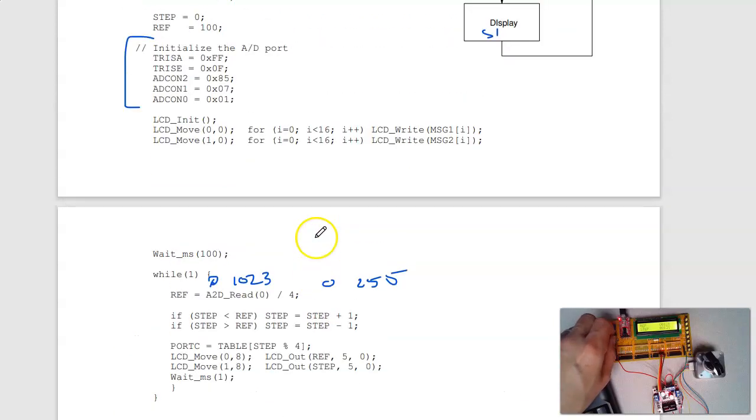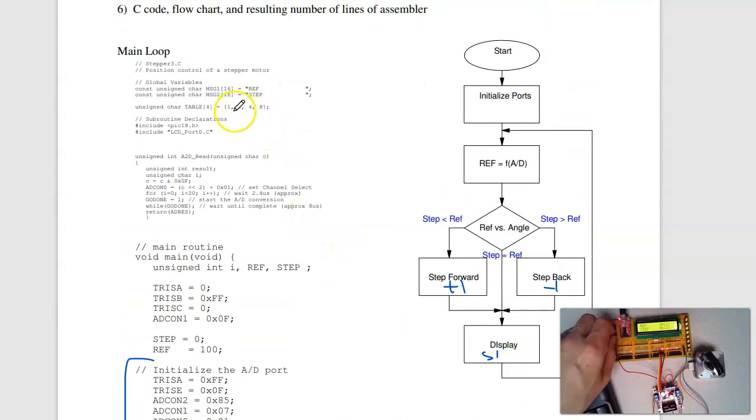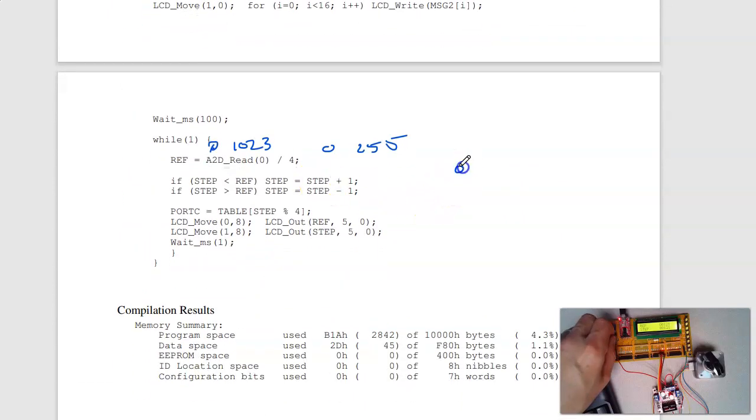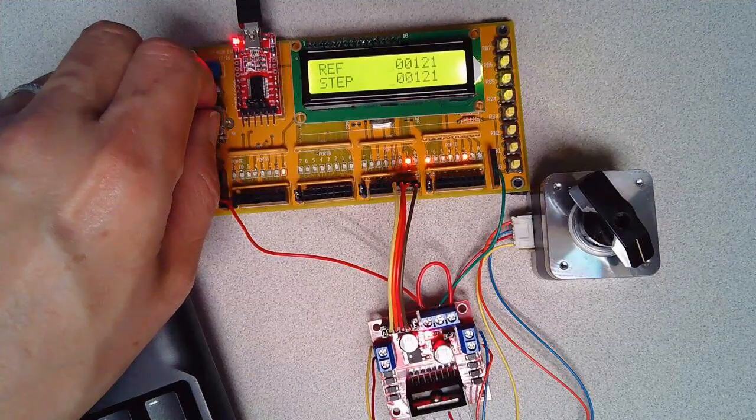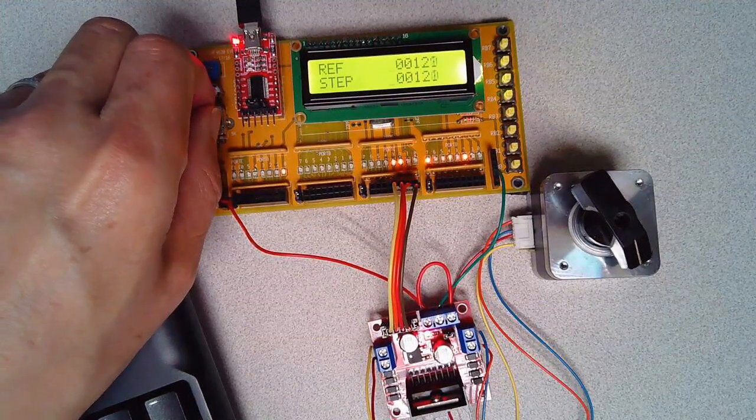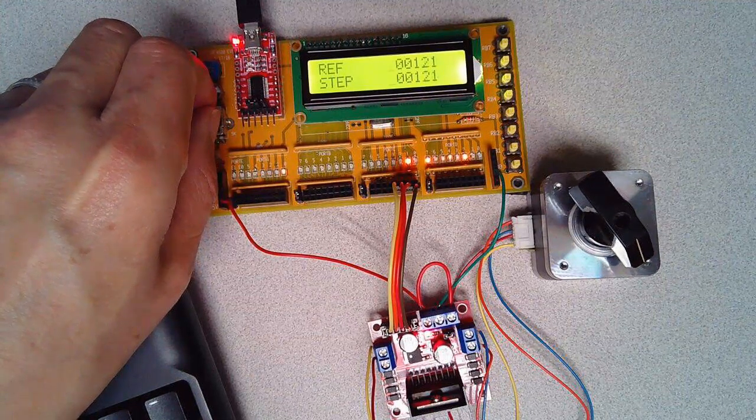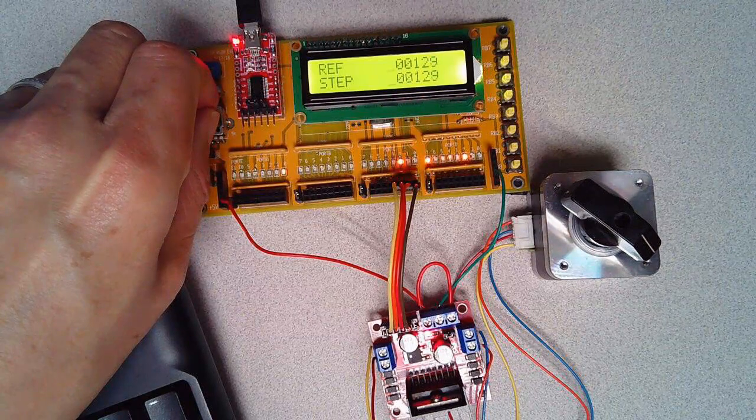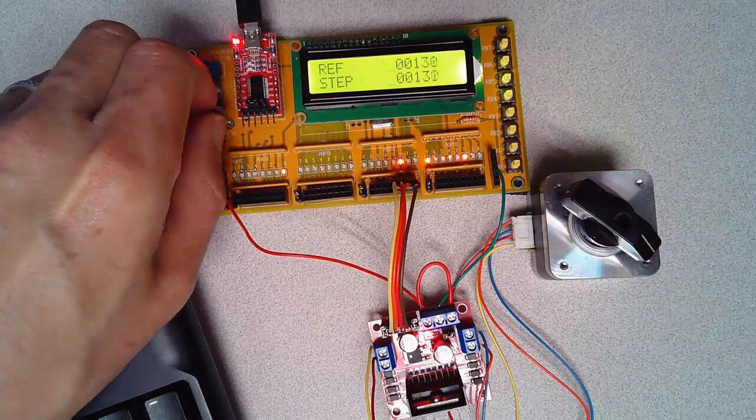Based upon the step, do a lookup table. Here's my lookup table right here. One, two, four, eight. Output the pattern zero, zero, zero, one. That's one, two, four, eight. And you can see that on the stepper motor. This is the bit pattern. So there's two. Four, eight, one, two, four, eight. One, two, four, eight. That makes the motor step.